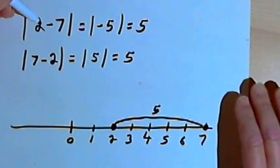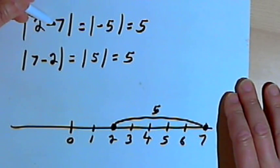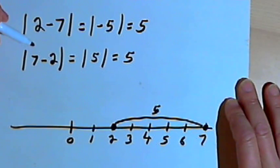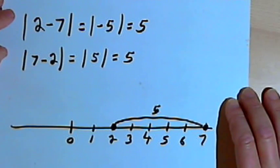So we can look at this problem of the absolute value of 2 minus 7 or the absolute value of 7 minus 2 as just asking the distance, just asking the question, what's the distance between those two numbers?